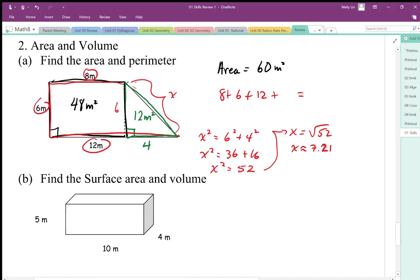I'm going to replace the x with 7.21. Again, make sure keeping track and organized. When I add that all together, I'm going to end up with 33.21 meters. Again, area is squares, length is meters.